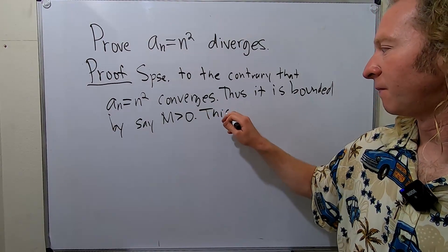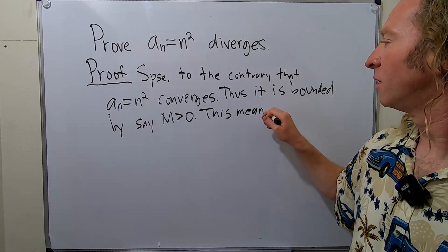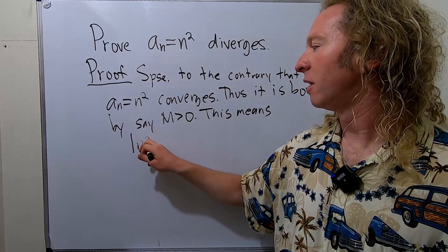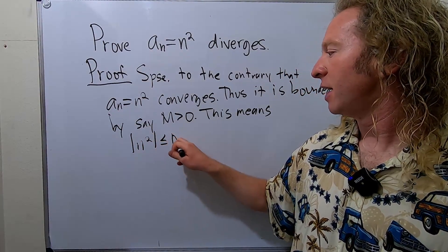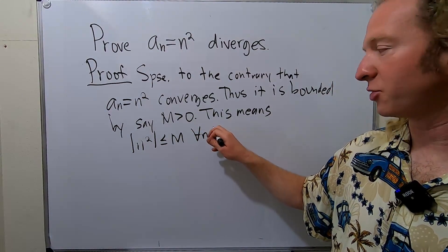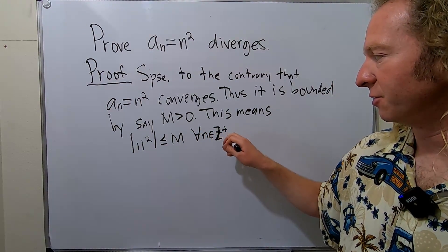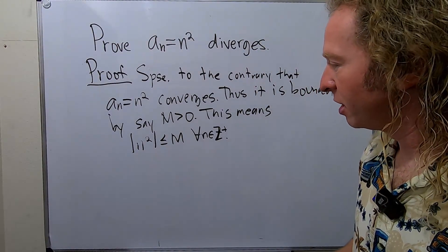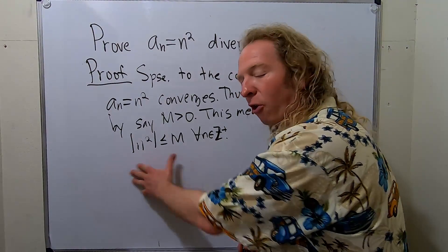So what does this mean? This means that the absolute value of a_n, in other words n², is less than or equal to M. And this has to be true for all n in the set of natural numbers, or positive integers. So this statement has to be true for all n.